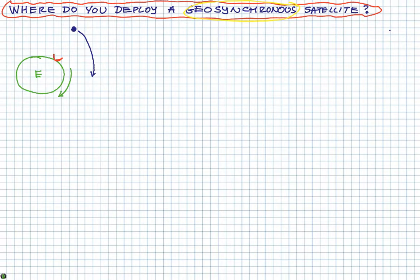It's geosynchronous because it's always above the same position, the same spot on the earth. That's what makes it geosynchronous. Geosynchronous satellites are above the equator. So my satellite dish is pointed towards the satellite, but it's kind of pointed towards the southern hemisphere from my home.